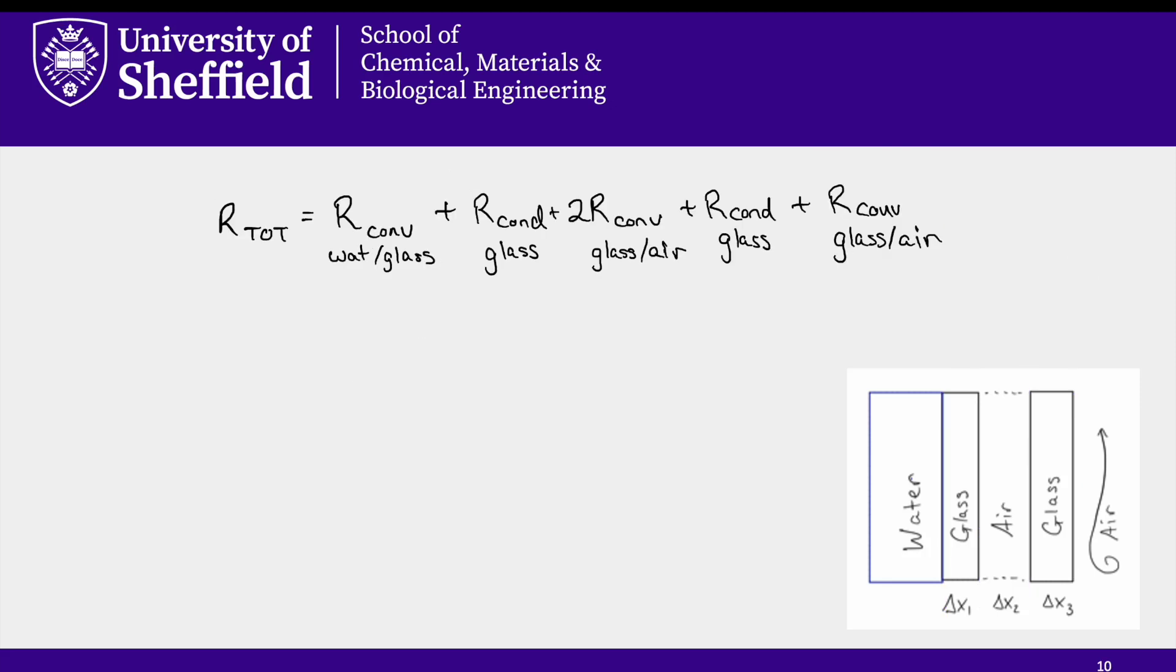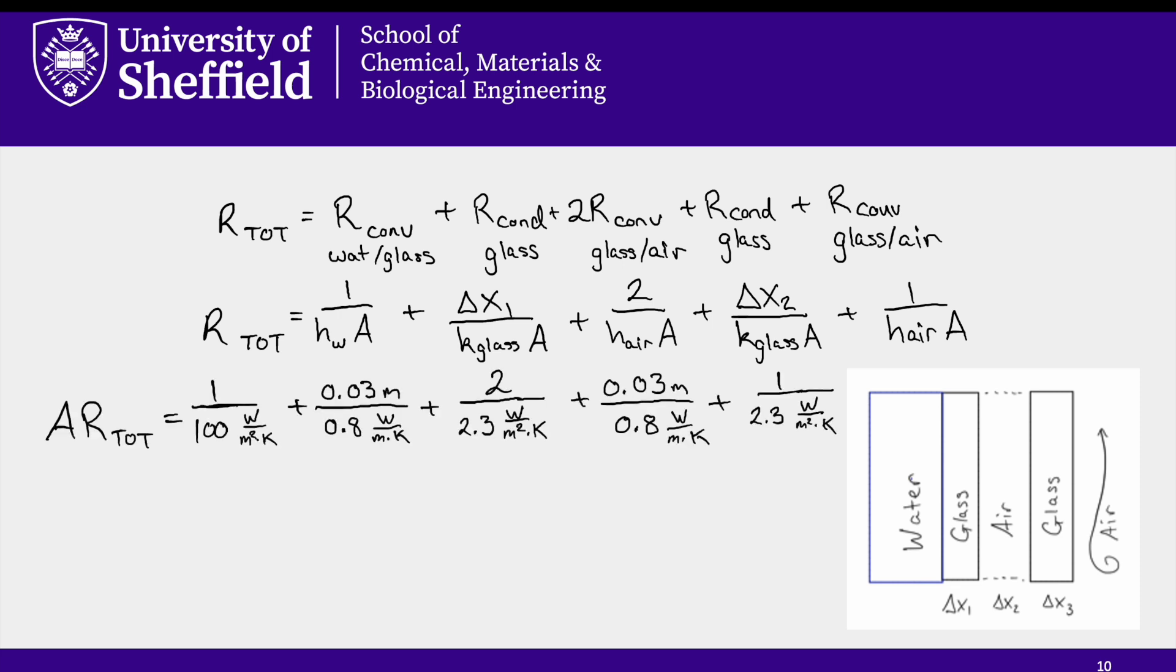Alright, we have our expression for the total thermal resistance, and now we write it out using the terms for convection in a slab and conduction in a slab. And if we insert the constants that we know, we're able to actually calculate a value for the area times the total thermal resistance, because we don't know the area of the aquarium.